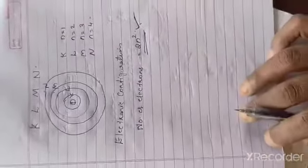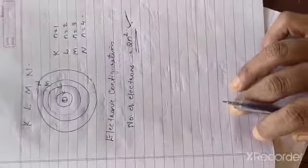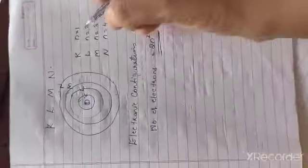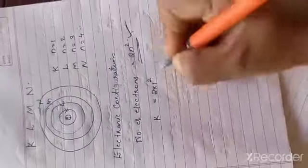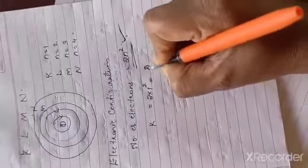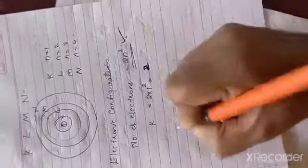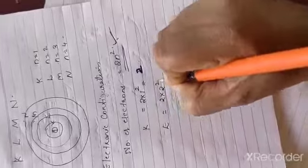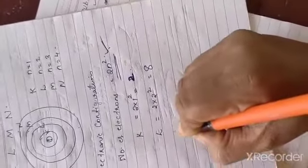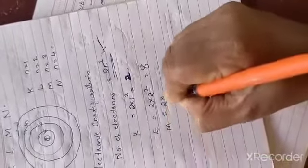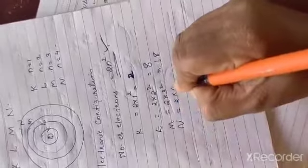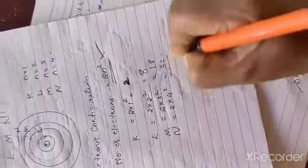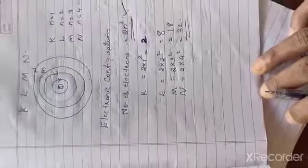This formula is very important. For the K-shell, that is 2 into 1 squared, which equals 2 electrons. For L-shell, 2 into 2 squared equals 8 electrons. For M-shell, 2 into 3 squared equals 18. For N-shell, 2 into 4 squared equals 32. These are the maximum number of electrons present in each shell.